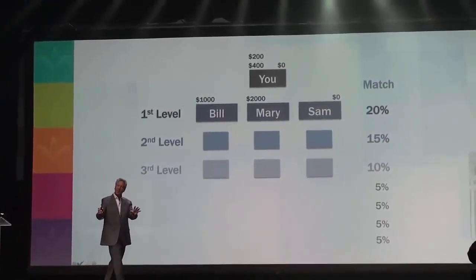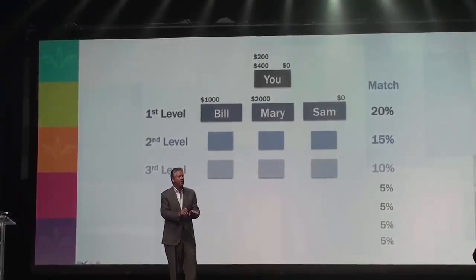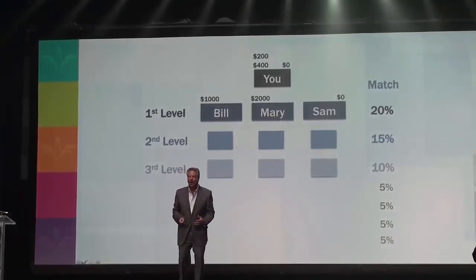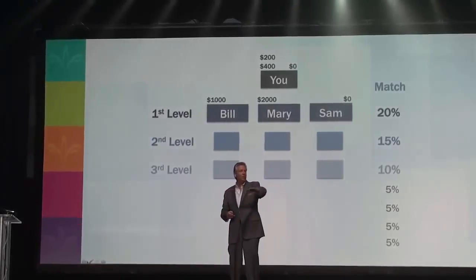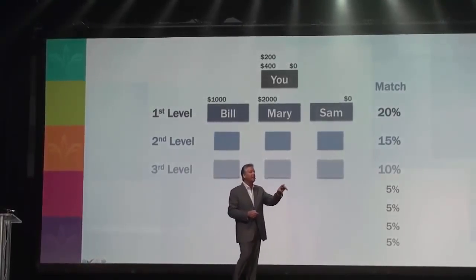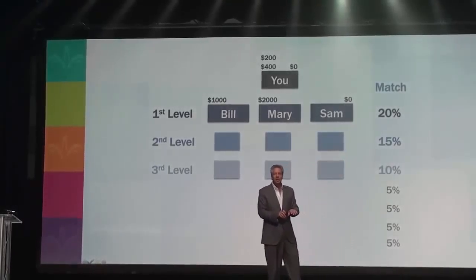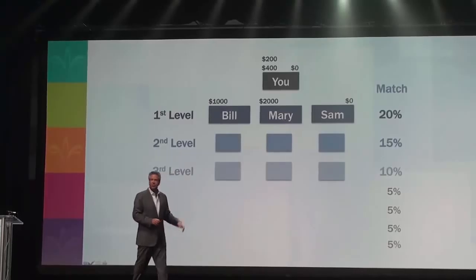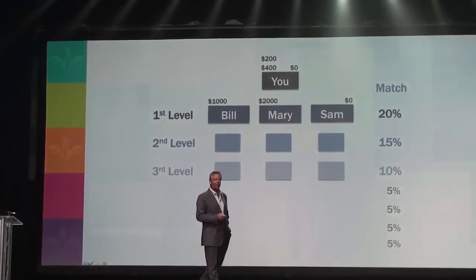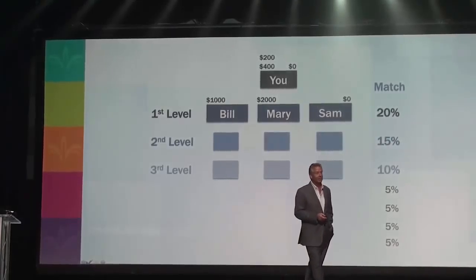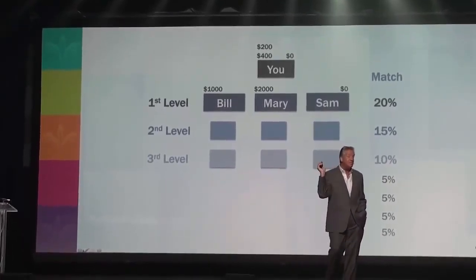Think about this — let's play a game. You personally introduce 10 people. Each of those 10 goes and gets 10 more — you can get 15% of 100 checks on your second level every week. Those 100 each go get 10 — you get 10% of 1,000 checks on your third level every week. There are people at this company making more money out of the matching check bonus program than they are even out of the team building.